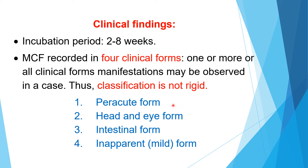The first, per-acute form — the word per-acute means very severe. Symptoms may or may not be obvious, but there is sudden death of the animal. The second is the head and eye form, where we see symptoms on the head, brain, and eyes. The third is the intestinal form, where we find symptoms of enteritis. The fourth is the inapparent or mild form, where symptoms are not severe — very mild or the animal may show subclinical, inapparent symptoms.